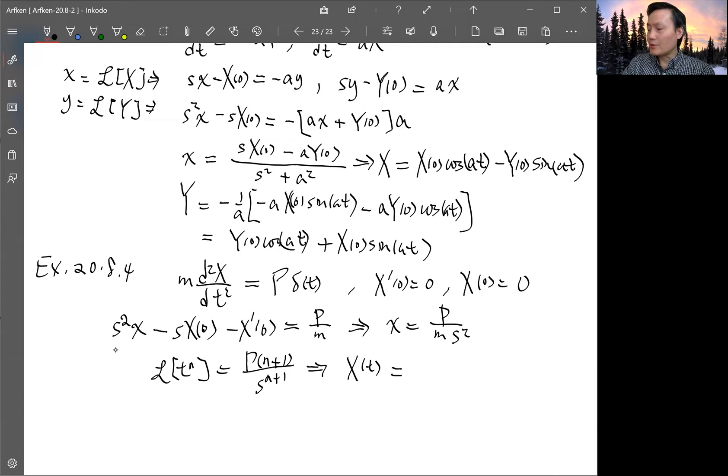So this implies that x(t) is just equals to, not t², n is 1, just t. This is p over m times t. And so x prime t will be just a constant p over m for all time.